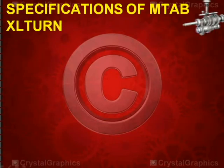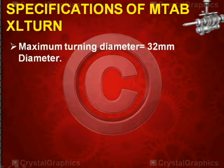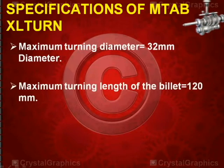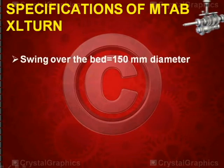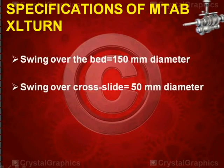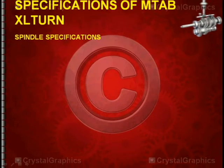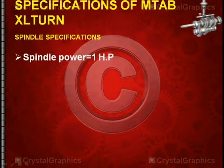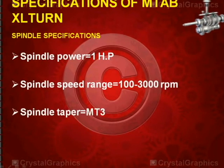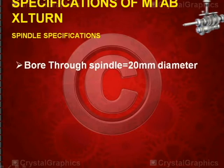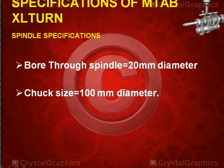The specifications of MTab XLtern machine are: maximum turning diameter of billet is 32mm, maximum turning length is 120mm, distance between centers is 210mm, swing over the bed is 150mm diameter, and swing over cross slide is 550mm diameter. Spindle specifications: spindle power is 1 HP, spindle speed range is 100 to 3000 RPM, spindle taper is MT3, bore through spindle is 20mm diameter, and chuck size is 100mm diameter.